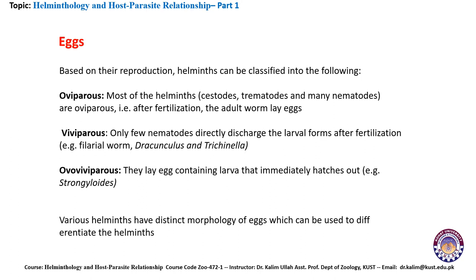Now let's talk about the egg form — another important morphological form of helminths. Based on their reproduction, helminths can be classified into the following major forms. First, oviparous: most helminths — cestodes, trematodes, and many nematodes — are oviparous, meaning that after fertilization the adult worm lays its eggs.